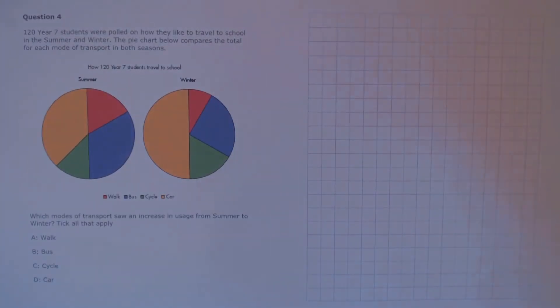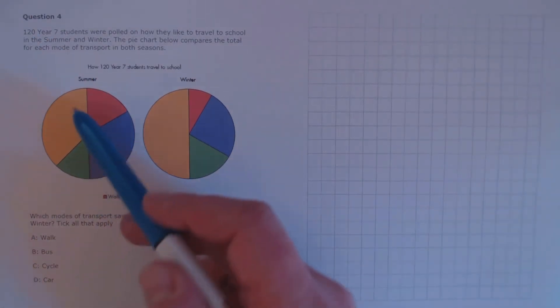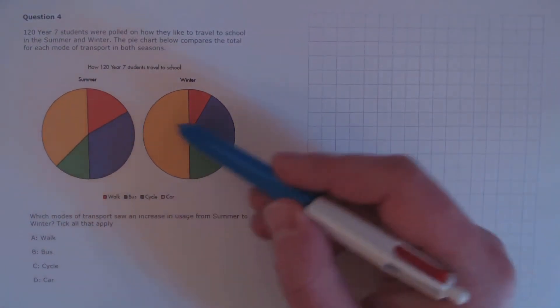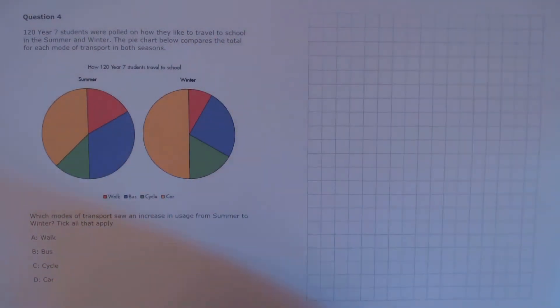Question 4. 120 Year 7 students were polled on how they liked to travel to school in the summer and winter. The pie chart below compares the total for each mode of transport in both seasons. Which modes of transport saw an increase in usage from summer to winter? For this one, we haven't been given any numbers about the sizes of the parts, so we need to estimate based on what we know.